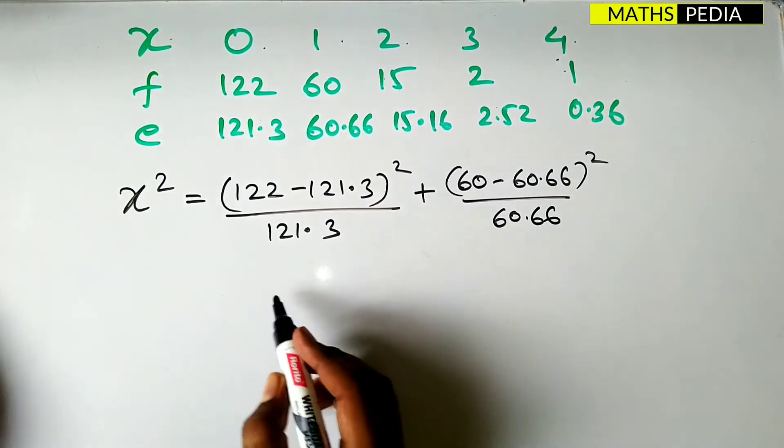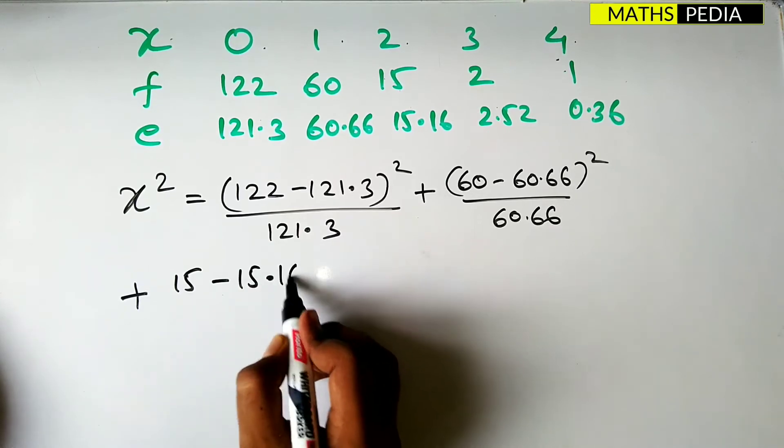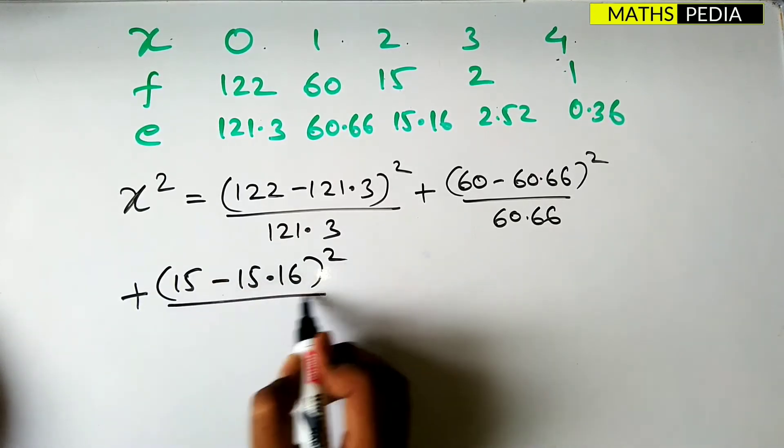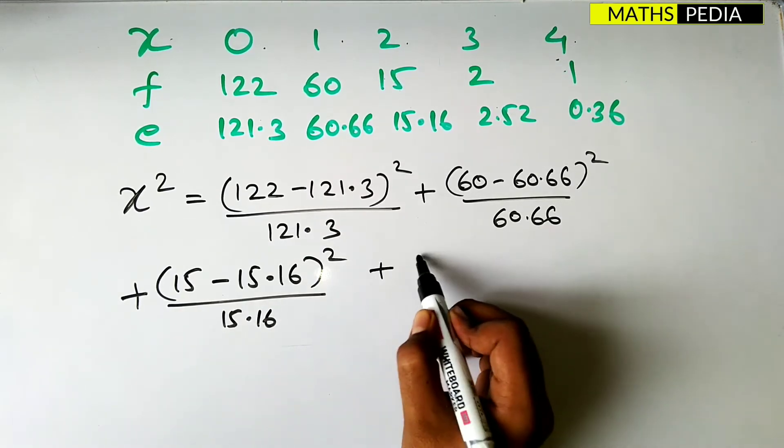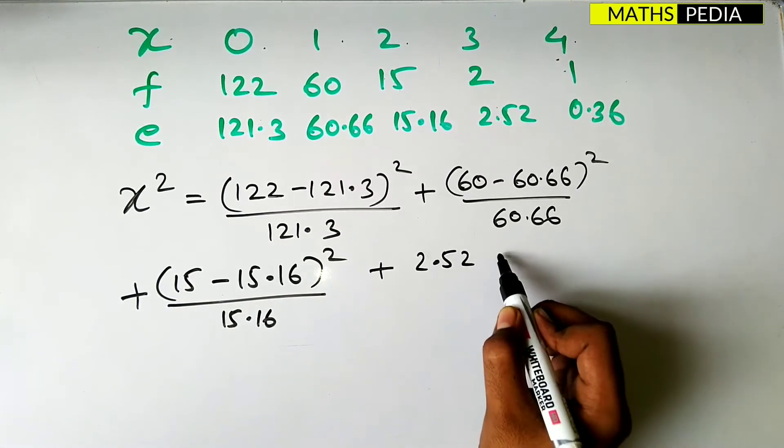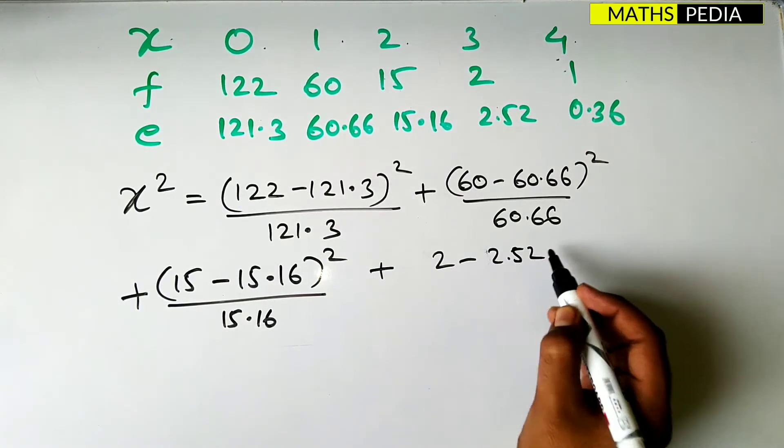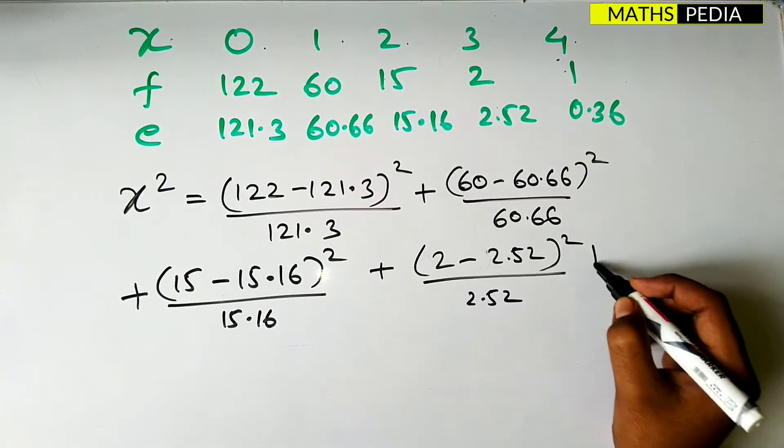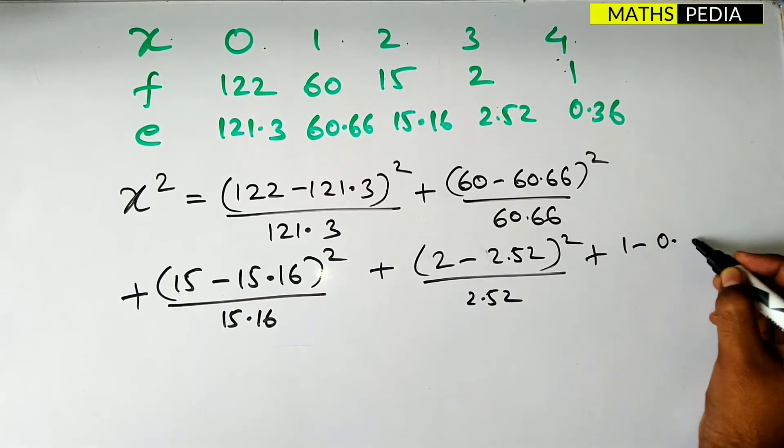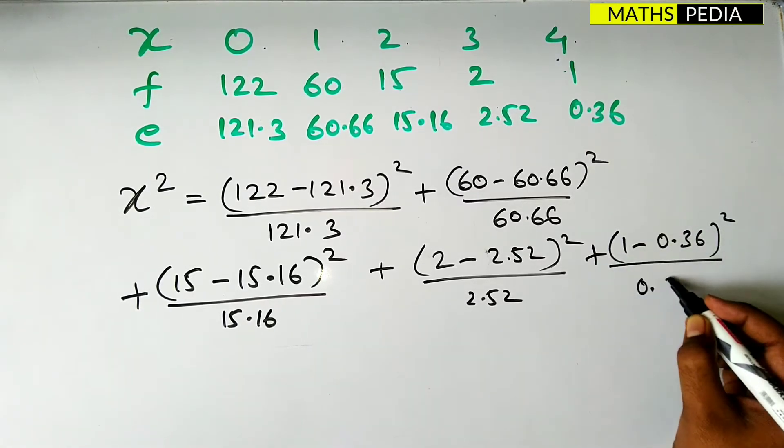15 minus 15.16 the whole square by 15.16 plus 2 minus 2.52 the whole square by 2.52. And the last and the final one which is nothing but 1 minus 0.36 the whole square by 0.36.